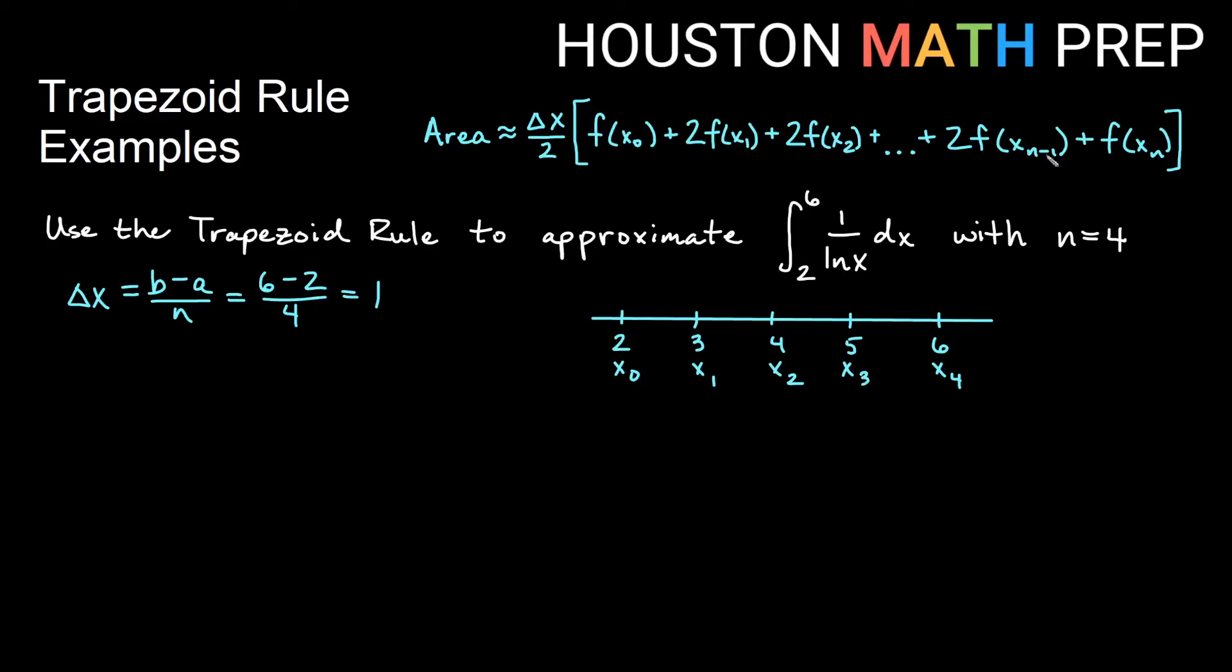So let's go ahead and get our y values. Remember, we need f of x values, not x values, to put in our trapezoid formula. So x₀ equals 2, and f of 2 is going to be 1 over ln 2.